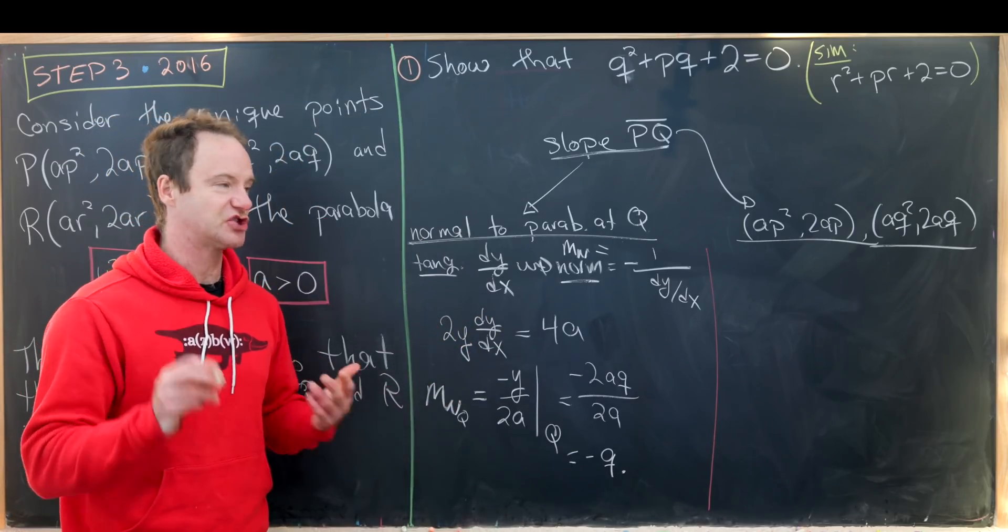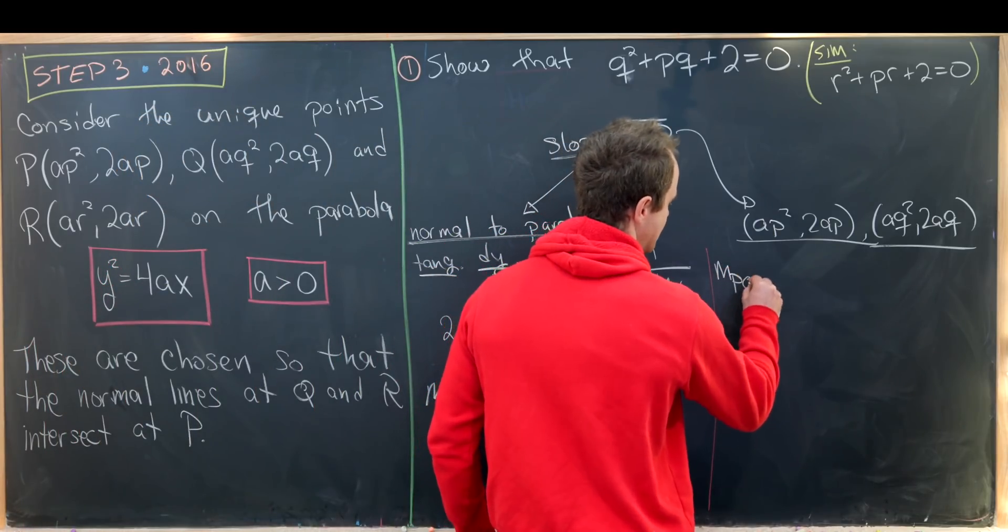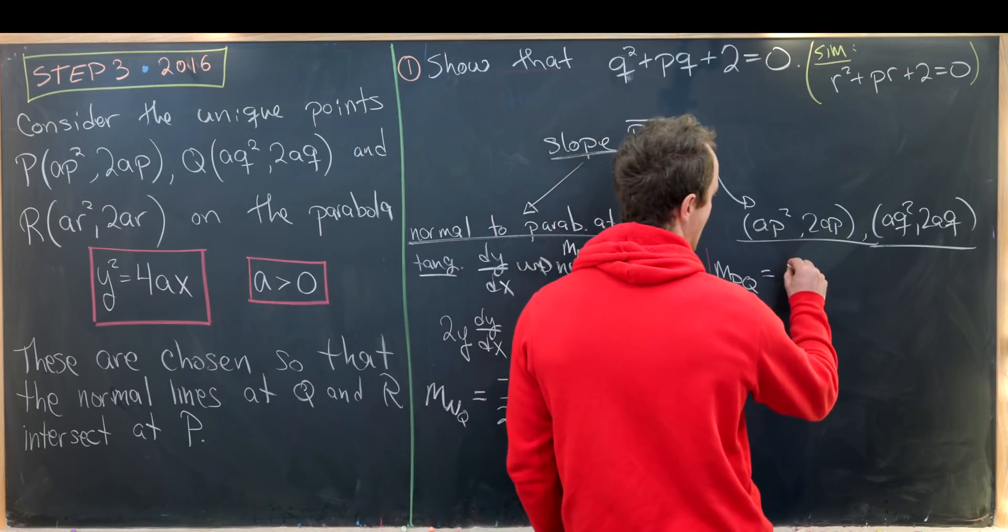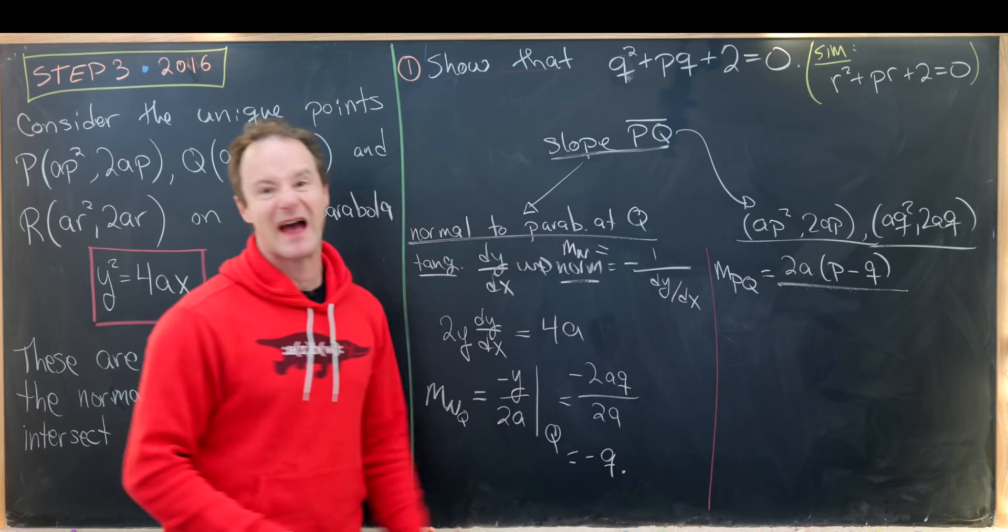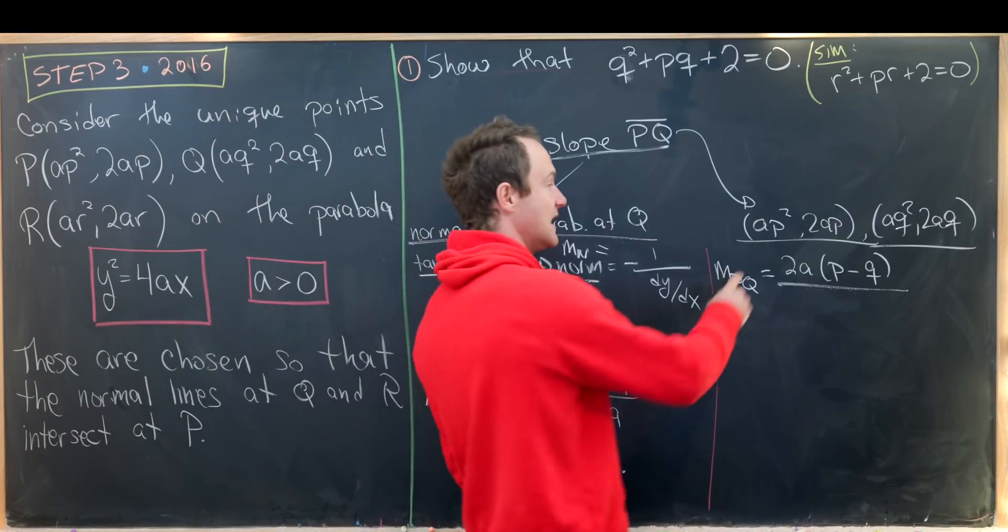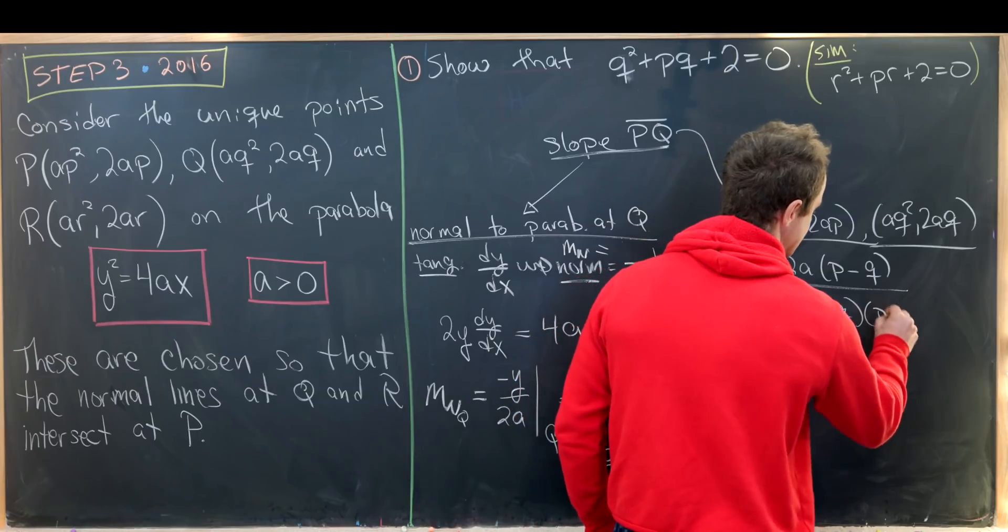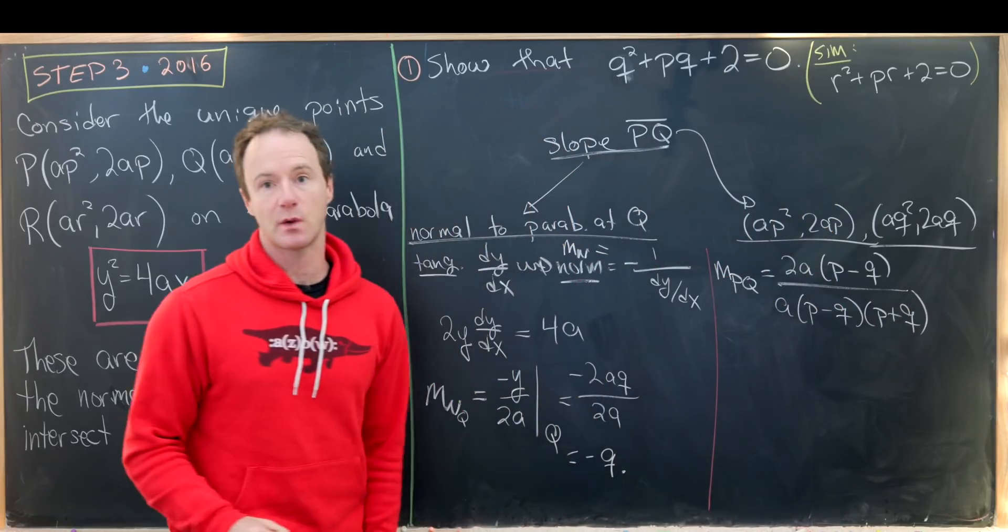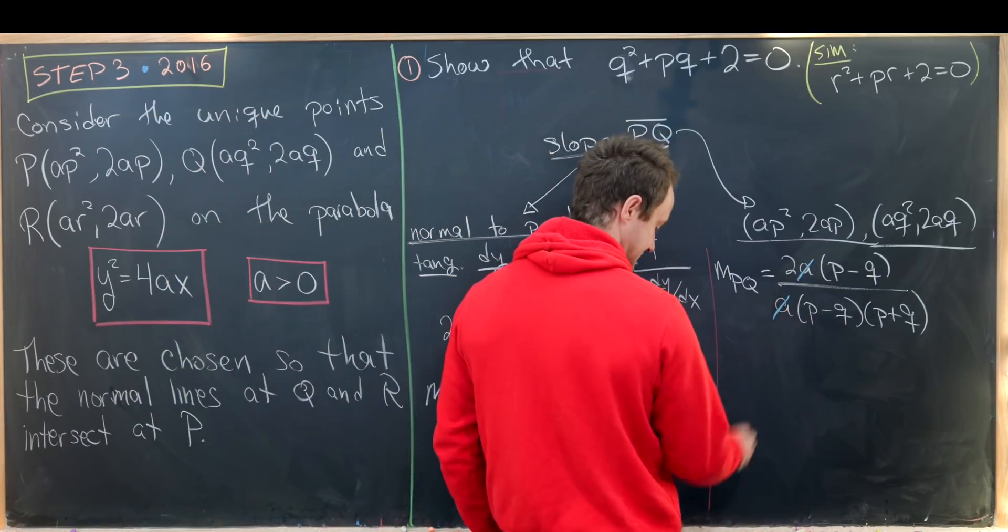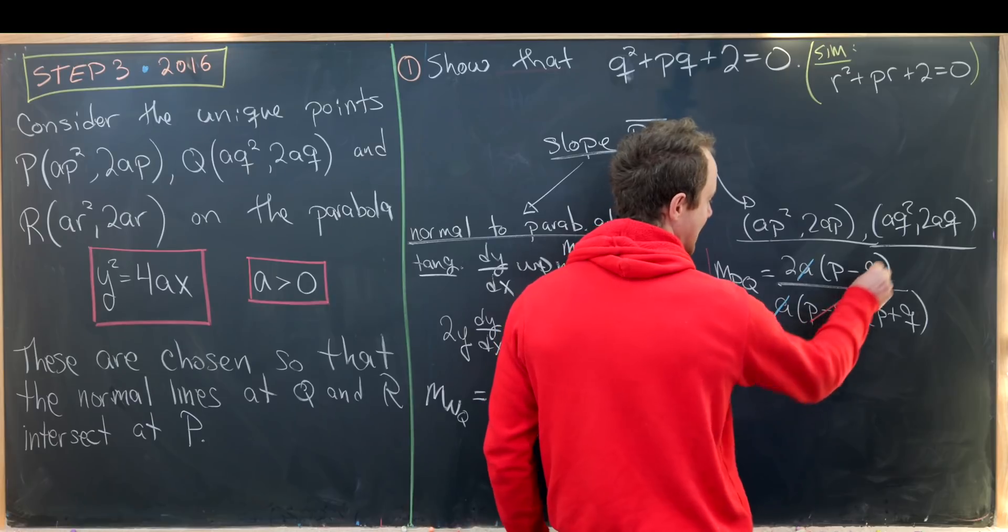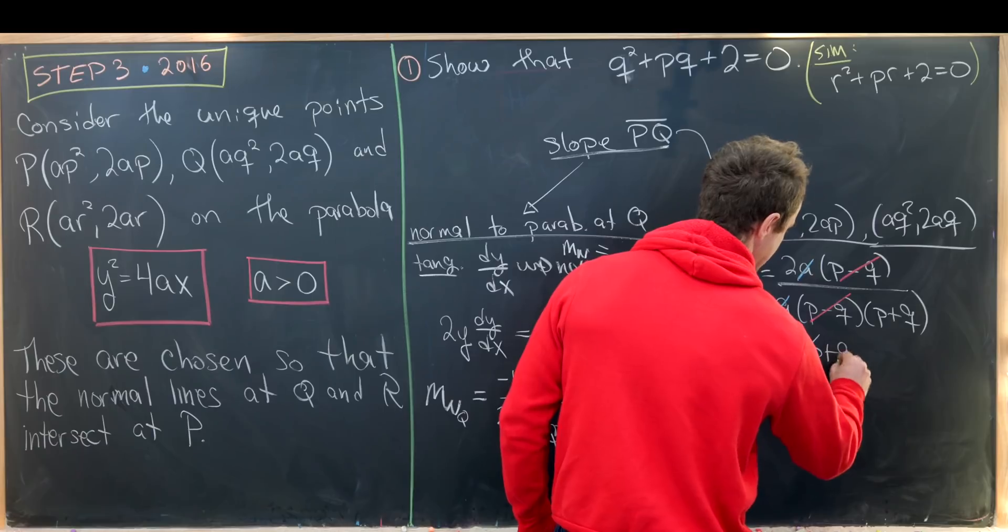Now we can use the standard change of y over change of x to calculate the slope a different way. So I'll take the difference of the y components, 2A(P-Q). Notice I can factor that 2A out. Then taking the difference of the x coordinates I'll have A(P-Q)(P+Q). I used the difference of squares factoring after factoring that A out. But now this A will cancel with this A and this P-Q will cancel with this P-Q leaving us with 2/(P+Q).